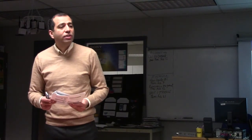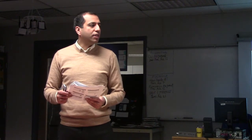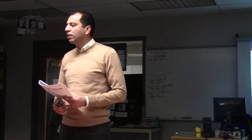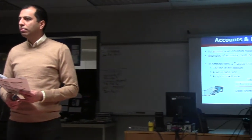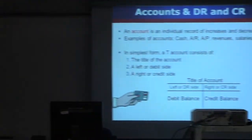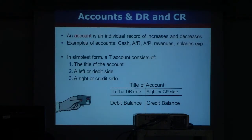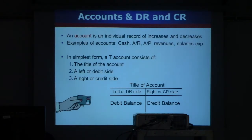Debit is always on the left side of the T-account — always. A credit is always on the right side of the T-account — always. You create T-accounts for visual understanding and to see where the debits and credits would be. At the end, you have a balance: either a debit balance or a credit balance.